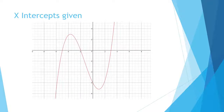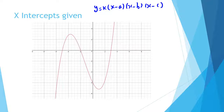We're going to work on the cubic. We can see that the x-intercepts are known, so we're going to use the general formula where a, b, and c are the x-intercepts. The x-intercepts here are negative 5, negative 2, and 3.